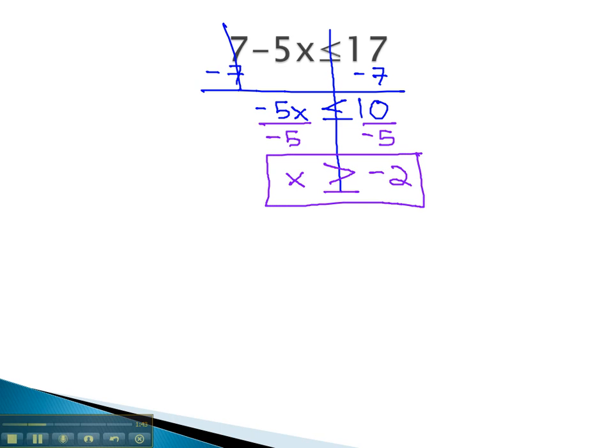To help us visualize this solution, we can graph it on a number line. At the number negative 2, because the inequality has the or equals to, we are going to need a closed dot.